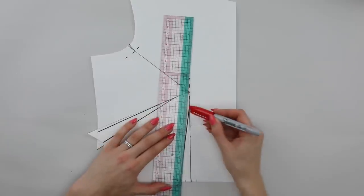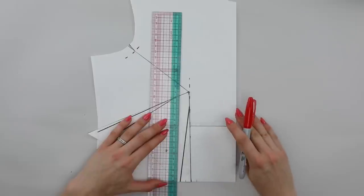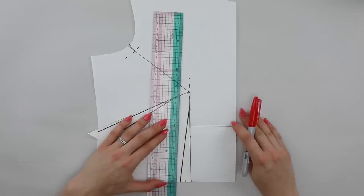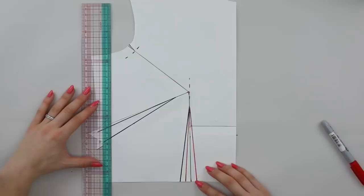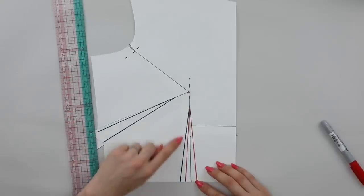And we're going to stick with the original dart point for this example until you have time to check the fit. So the red lines are the new dart lines at the waist, and the black line for the waist dart is going to be ignored.